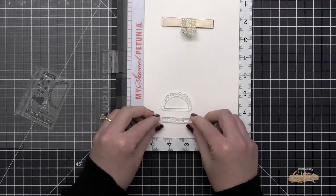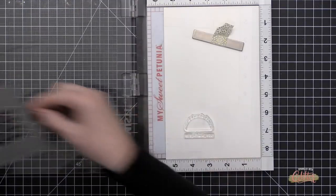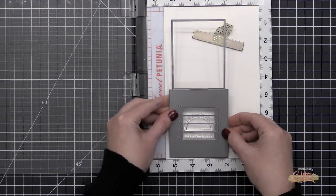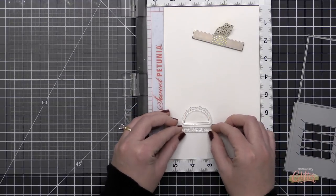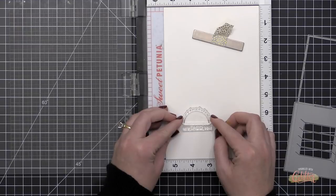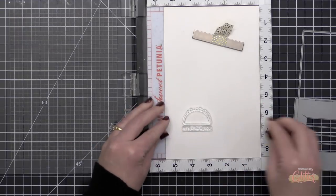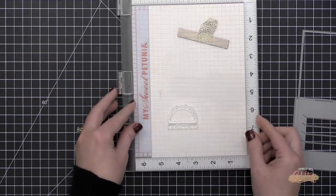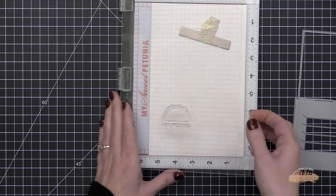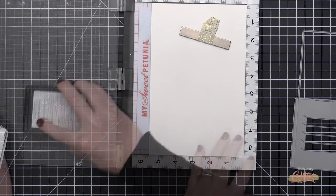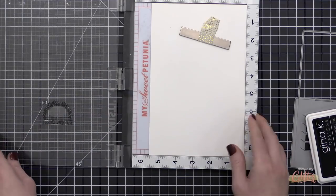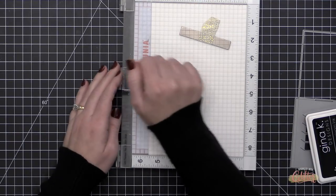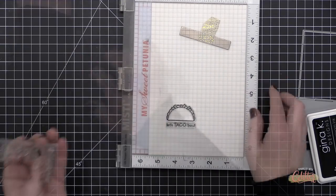I am using the Lawn Fawn Year Five stamp and die set. This is a taco set which I think is so adorable. It of course has the little faces that you can stamp onto the taco because that is signature Lawn Fawn. I am starting out by stamping this taco and the sentiment that says "let's taco bout" in some Copic-friendly ink onto some Neenah Solar White 80-pound cardstock.